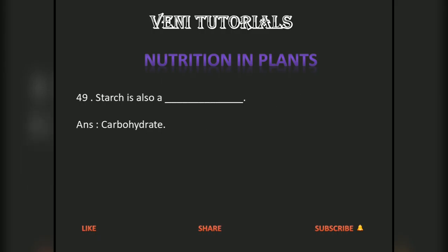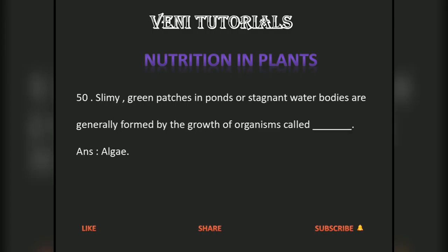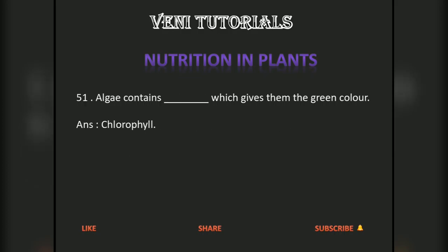Starch is also a carbohydrate. Slime-like green patches in ponds or stagnant water bodies are generally formed by the growth of organisms called algae. Algae contain chlorophyll which gives them the green color.